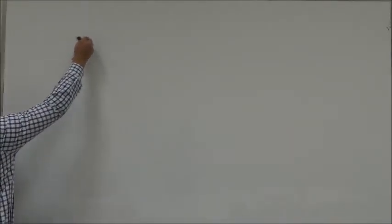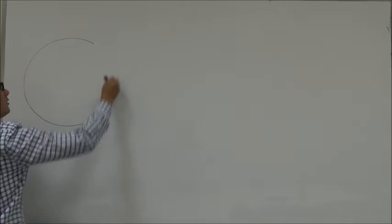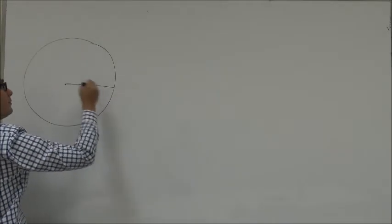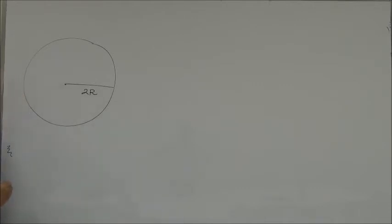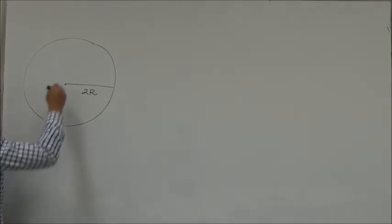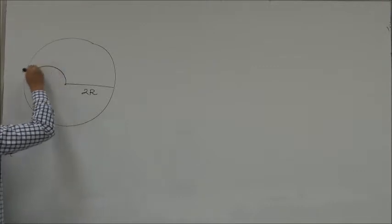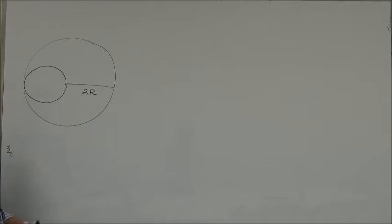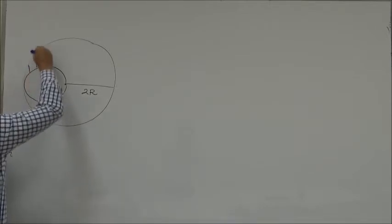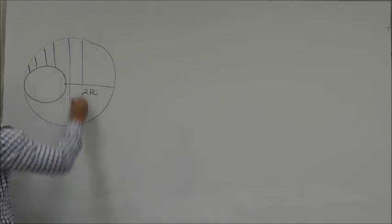In this example, we are given a uniform circular plate of radius 2R. A smaller circle of radius R is cut out of the plate. The question is: what is the center of mass of the remaining figure? In other words, we need to find the center of mass of this shaded figure.